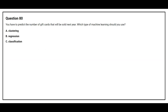Question number 80. You have to predict the number of gift cards that will be sold next year. Which type of machine learning should you use? Option A: Clustering. Option B: Regression. Option C: Classification. The correct answer is Option B, Regression.